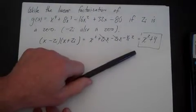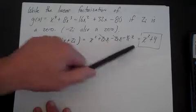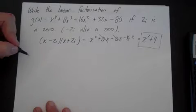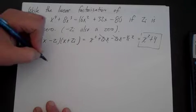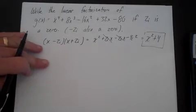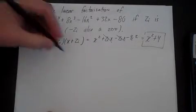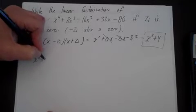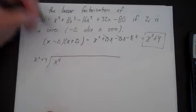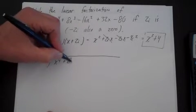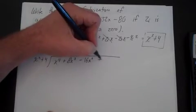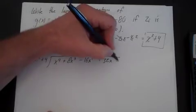If x² + 4 is a factor, then we can divide g(x) by x² + 4 to figure out what the remaining factors will be. I'm going to use polynomial long division: x² + 4 divided into x⁴ + 8x³ - 16x² + 32x - 80.